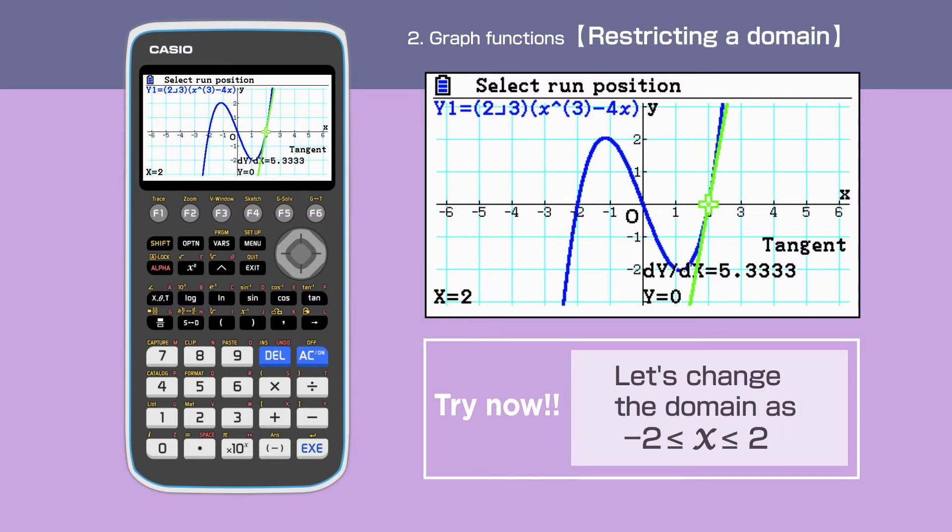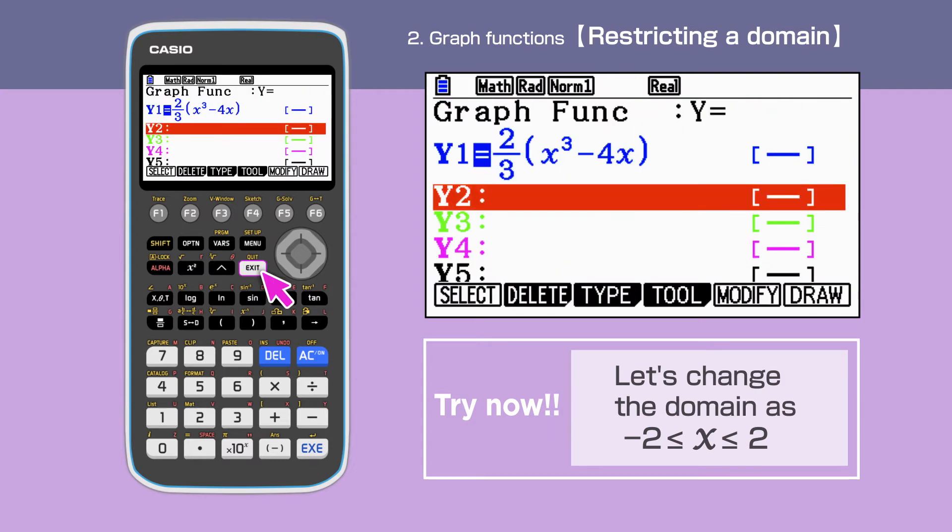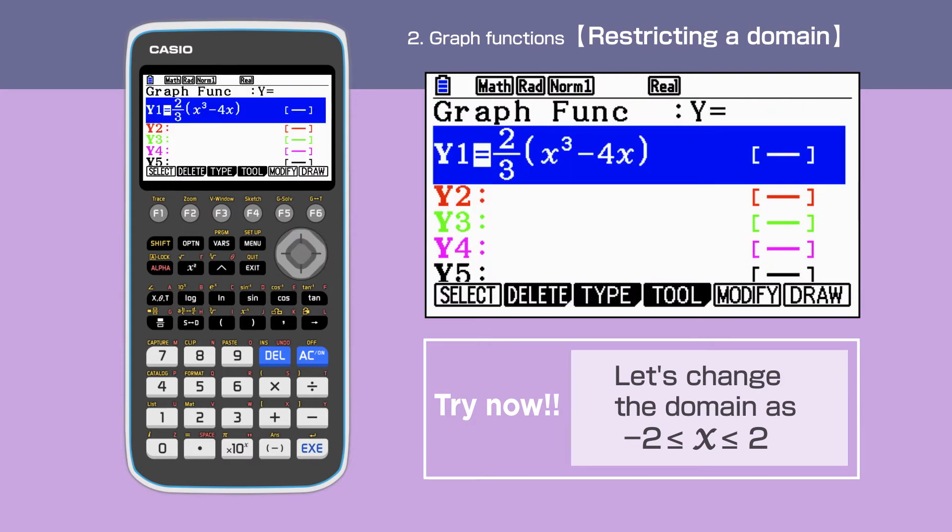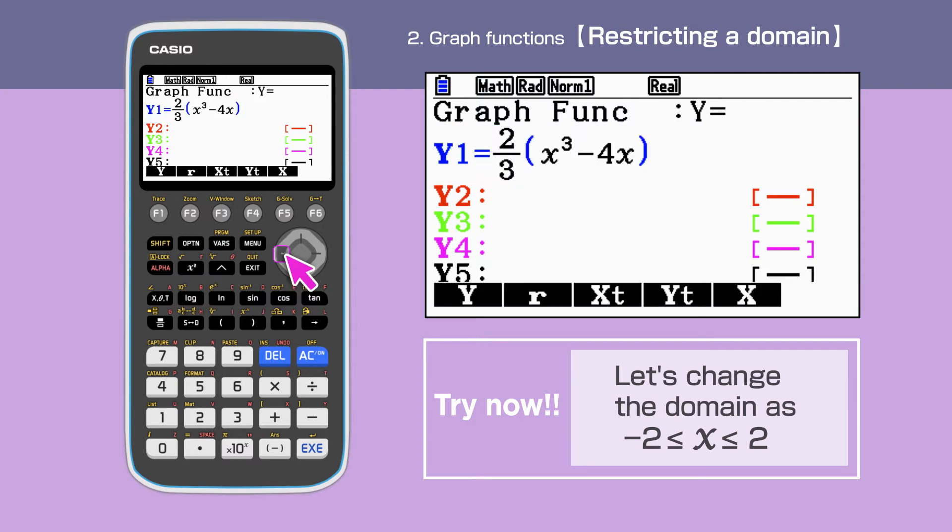Next, we are setting a domain. We will use the same function for this. Go back to the Graph Function screen and highlight y1. We are setting the domain as x is between minus 2 and 2 as an example for this. Move the cursor at the end of the equation, then put a comma. After the comma, press a square bracket.